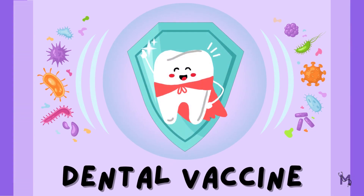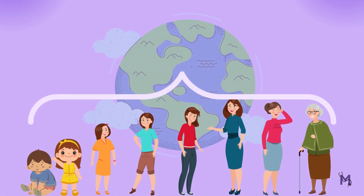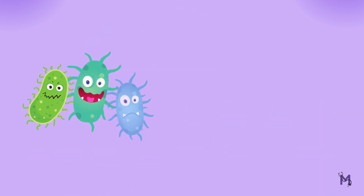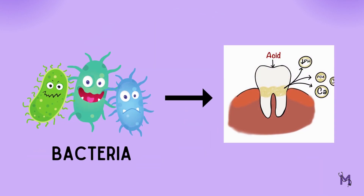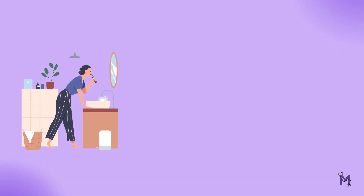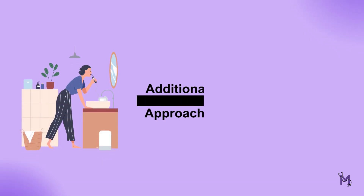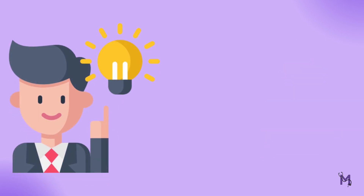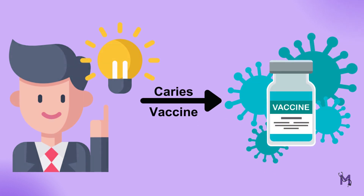We are already aware that dental caries is a widespread issue that affects people of all ages. Caries is caused when oral bacteria creates acids that erode the enamel. Other than proper oral hygiene practices, there is a need for additional approaches to reduce the burden of this disease. This is where a revolutionary approach to preventing tooth decay by using a caries vaccine comes in.